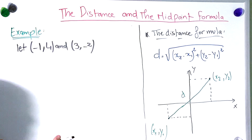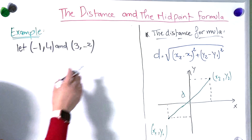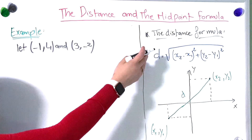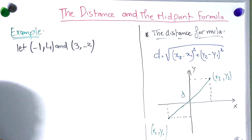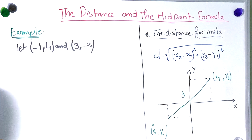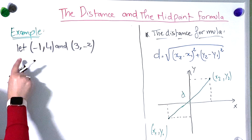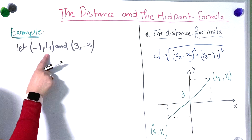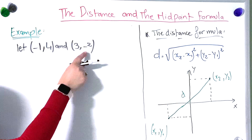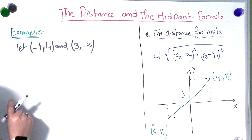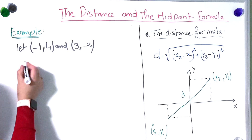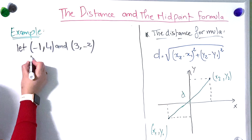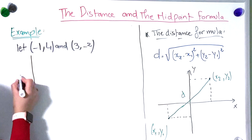Now let's move to an example to explain the distance formula and make it more clear. We have the first point (−1, 4) and the second point (3, −2). Let's graph these two points first.